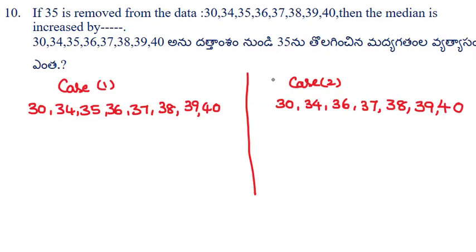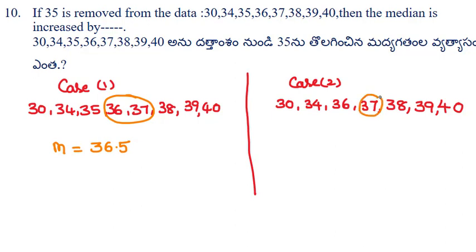Some data is given. If 35 is removed, what is the difference between the medians? In case one, the median = (36+37)/2 = 36.5. In case two (with 35 removed), there is only one value in the middle, so the median = 37. The difference = 37 − 36.5 = 0.5. So the difference between the medians is 0.5.